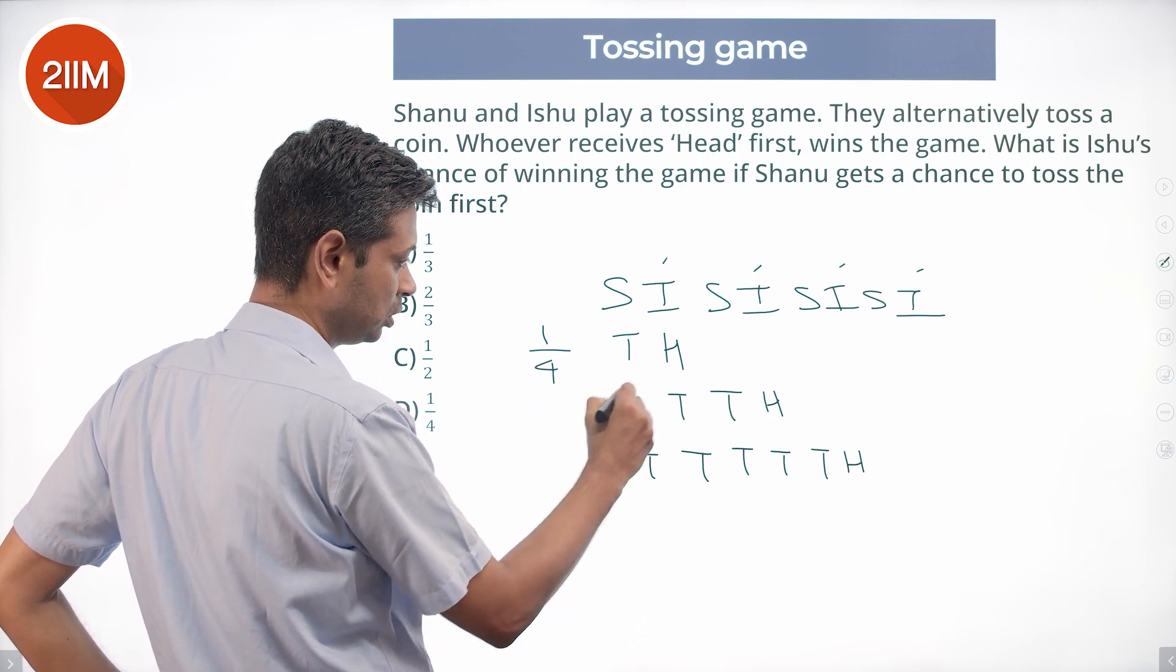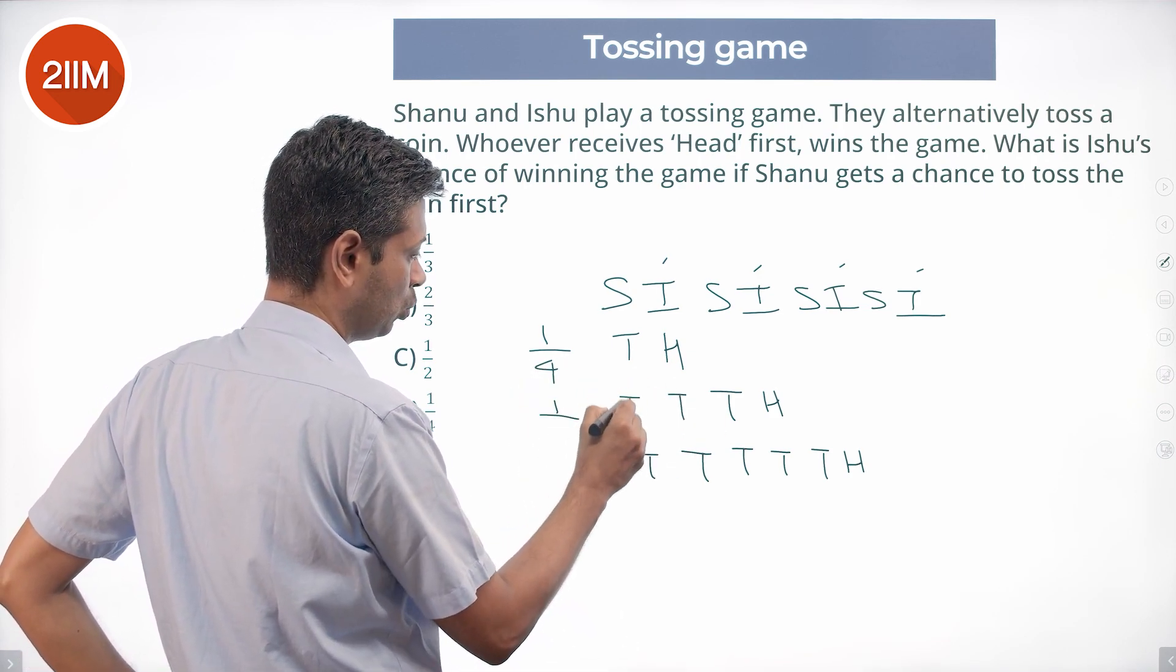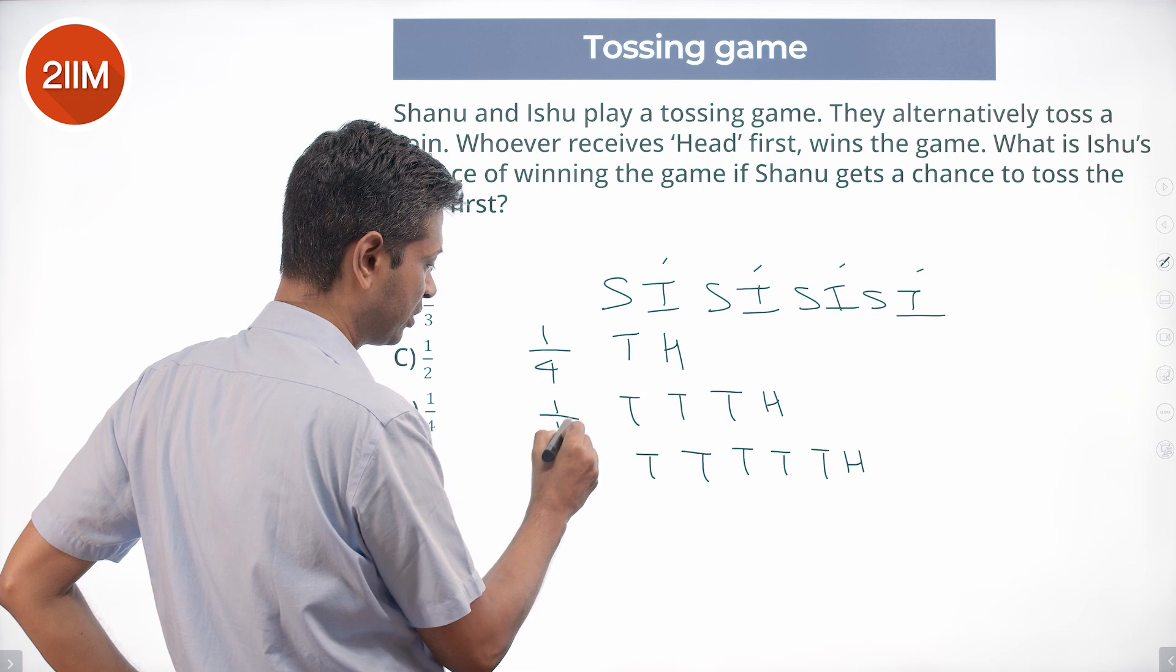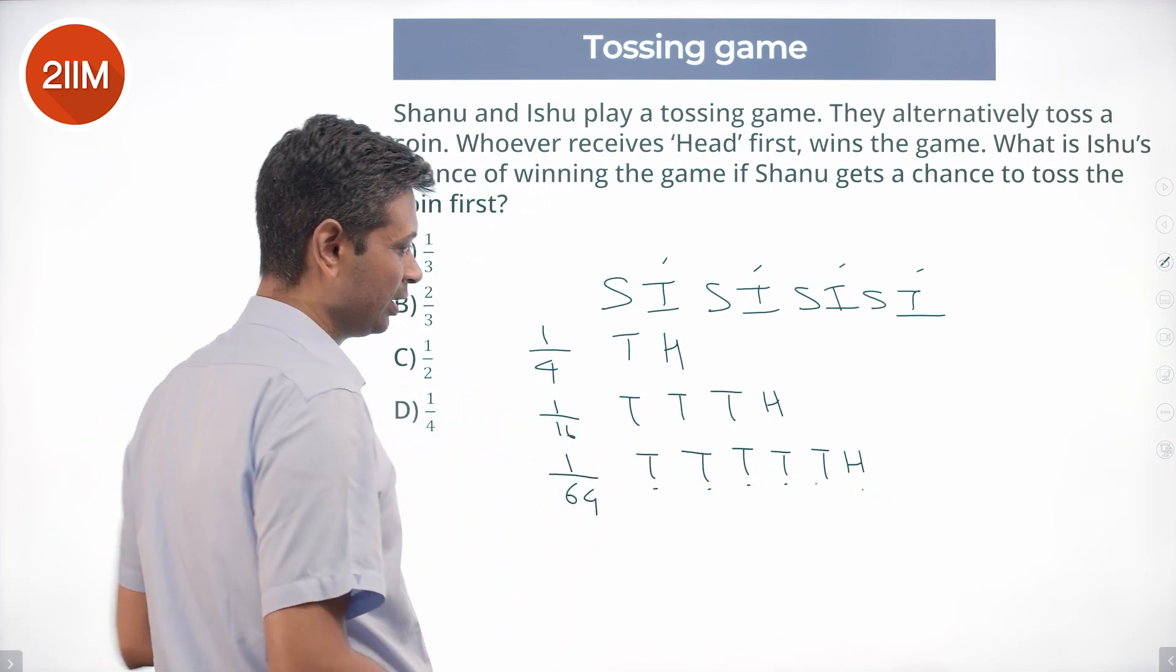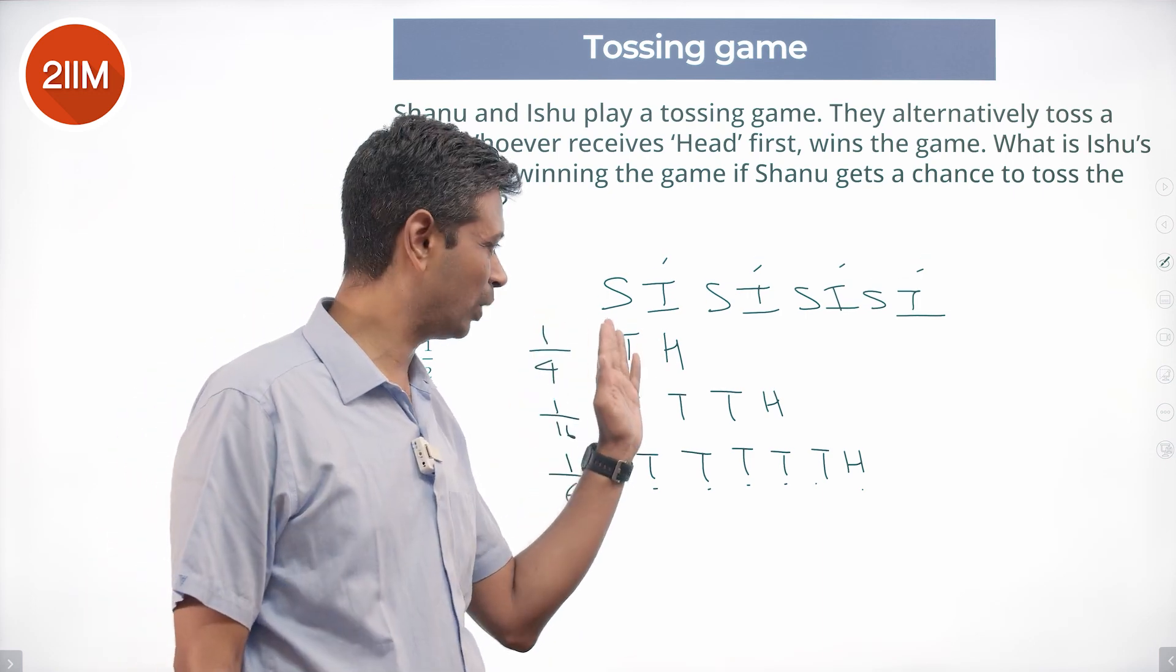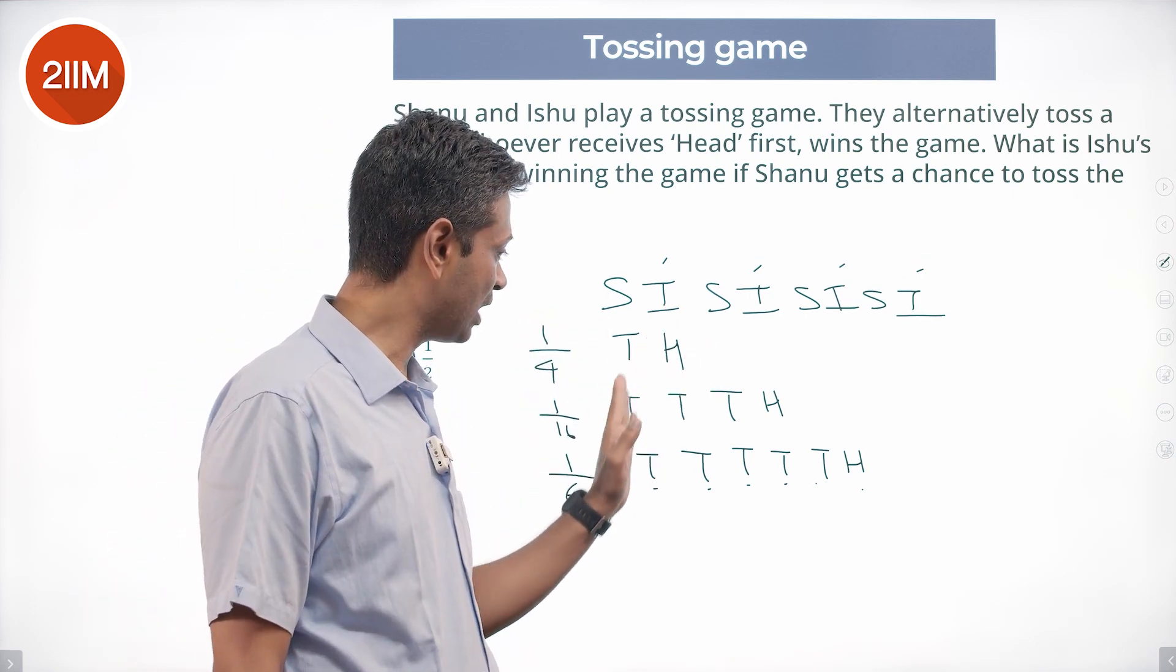1 by 4, this is 1 by 2, 1 by 4, 1 by 8, 1 by 16. Each event is 1 by 2, half and half, half and half, half and half.